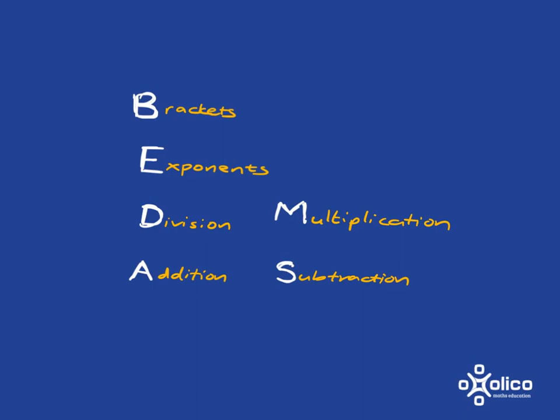BEDMAS tells us the order in which we must do operations when we've got a whole long, complicated calculation to do. It tells us we start with anything that's inside brackets, and we sort out what's inside the brackets first.